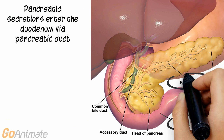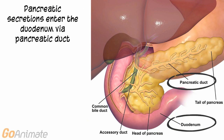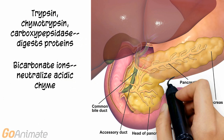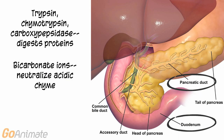The pancreas also secretes substances into the duodenum via the pancreatic duct. These include pancreatic amylase for carbohydrate digestion, pancreatic lipase for fat digestion, and trypsin, chymotrypsin, and carboxypeptidase for protein digestion. Bicarbonate ions are also secreted by the pancreas to neutralize the acidic chyme from the stomach. The digestive enzymes work better under more alkaline conditions.